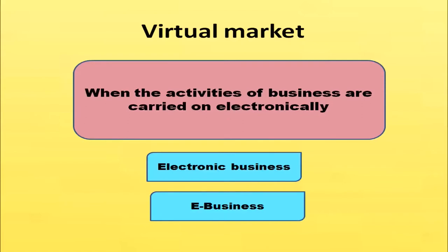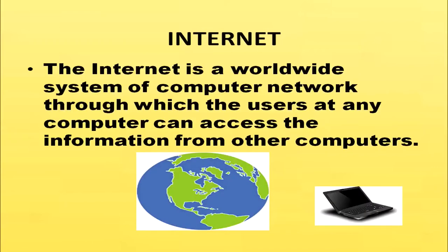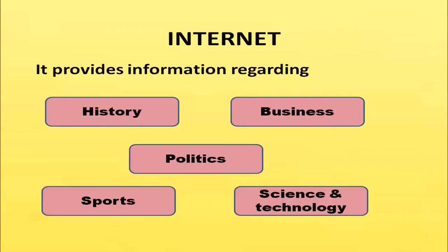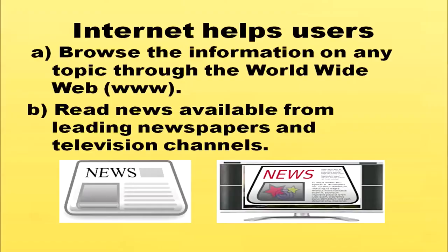When the activities of a business are carried on electronically, it is known as electronic business or e-business. The internet is a worldwide system of computer networks through which users at any computer can access information from other computers. Internet provides information regarding history, business, politics, sports, science and technology, and any other information a person needs. Internet helps users to browse information on any topic through the World Wide Web.